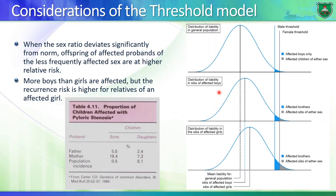Looking at the distribution of liability: in a family with an affected boy, the belt curve shifts to the right, increasing the chance that males are affected. If the girl is affected, there is a further shift of the belt curve to the right, meaning there is a good chance that both males and females would be affected, compared to the general population.